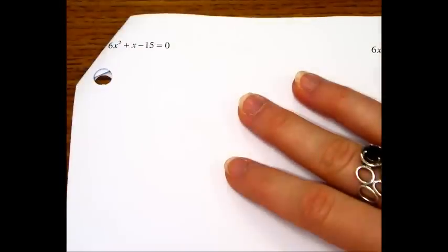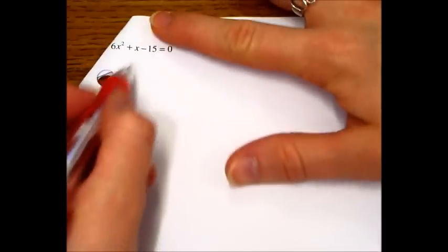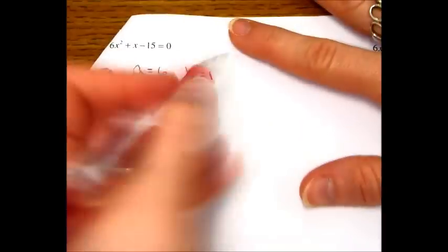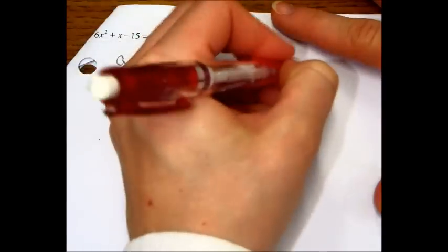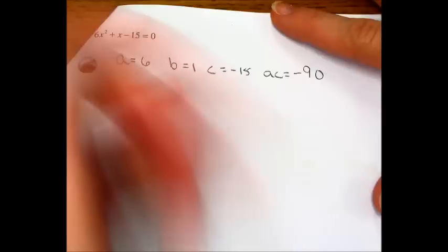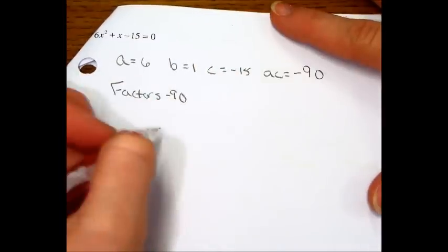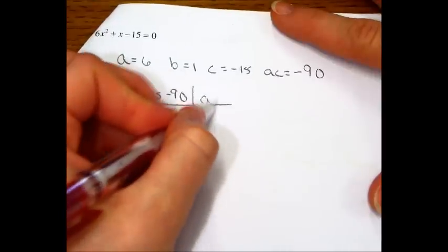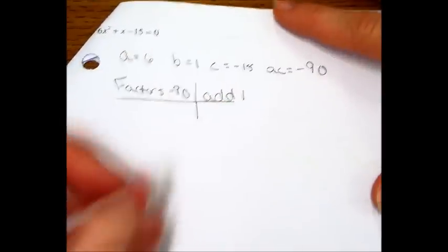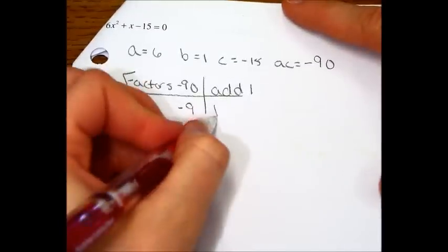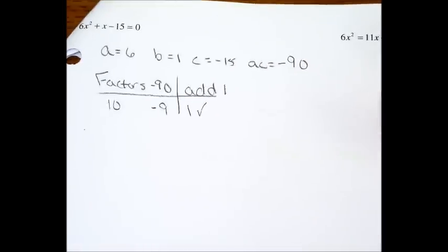The next problem, you would do it the exact same way. You're going to find, this one's already set equal to 0. So you say a is 6, b is 1, c is negative 15. And ac is 6 times negative 15, which is negative 90. Now you need to find your factors of negative 90. Notice I'm going a little faster since we've done it a few times already. They need to add to 1. The answer would be a positive 10 and a negative 9. That gives you a positive 1.